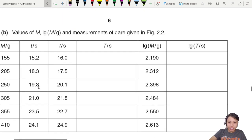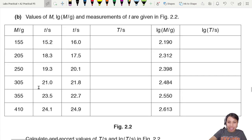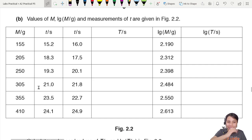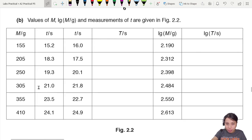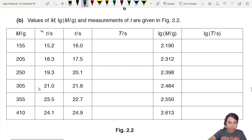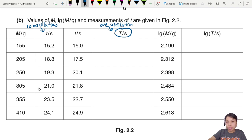Now we come to the table section. Remember, small t is for 10 oscillations, and big T over here is for one oscillation — that's the period. So you need to calculate that value by finding the average first.